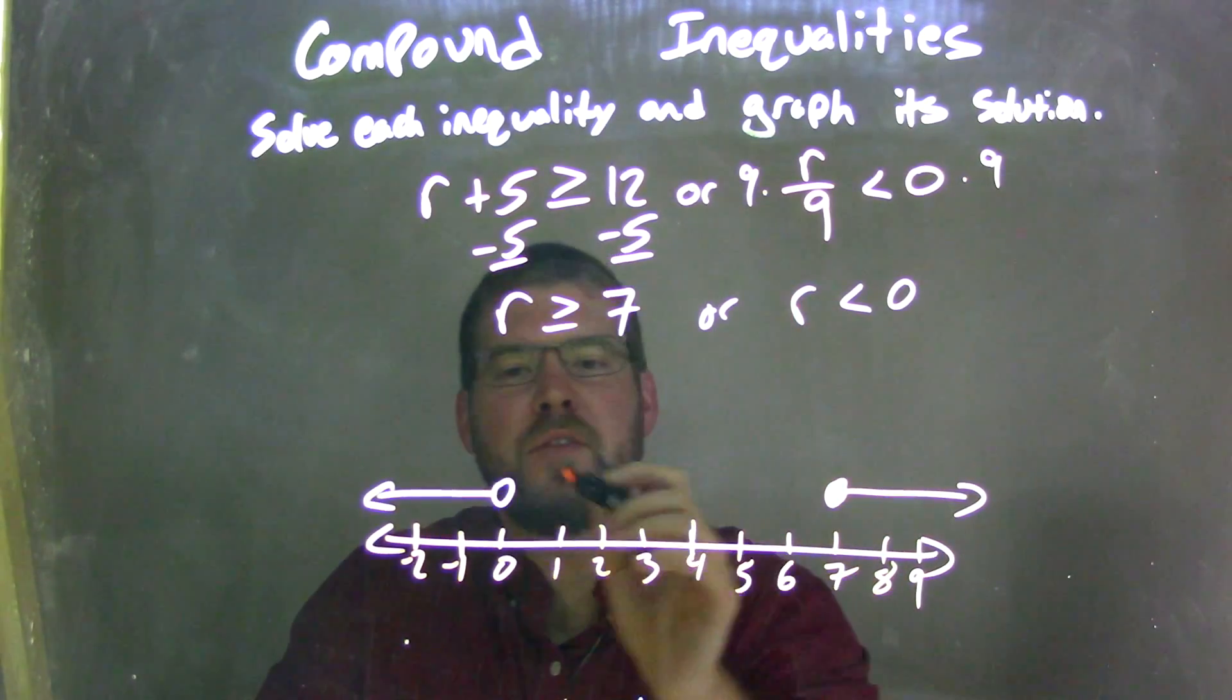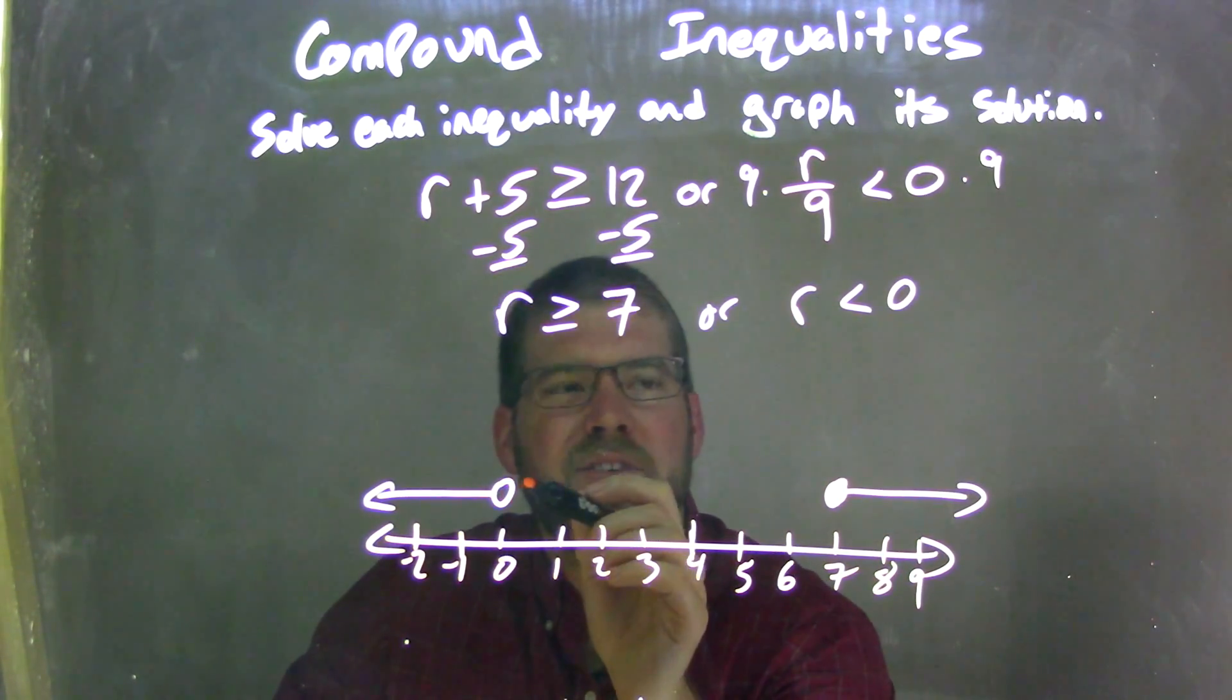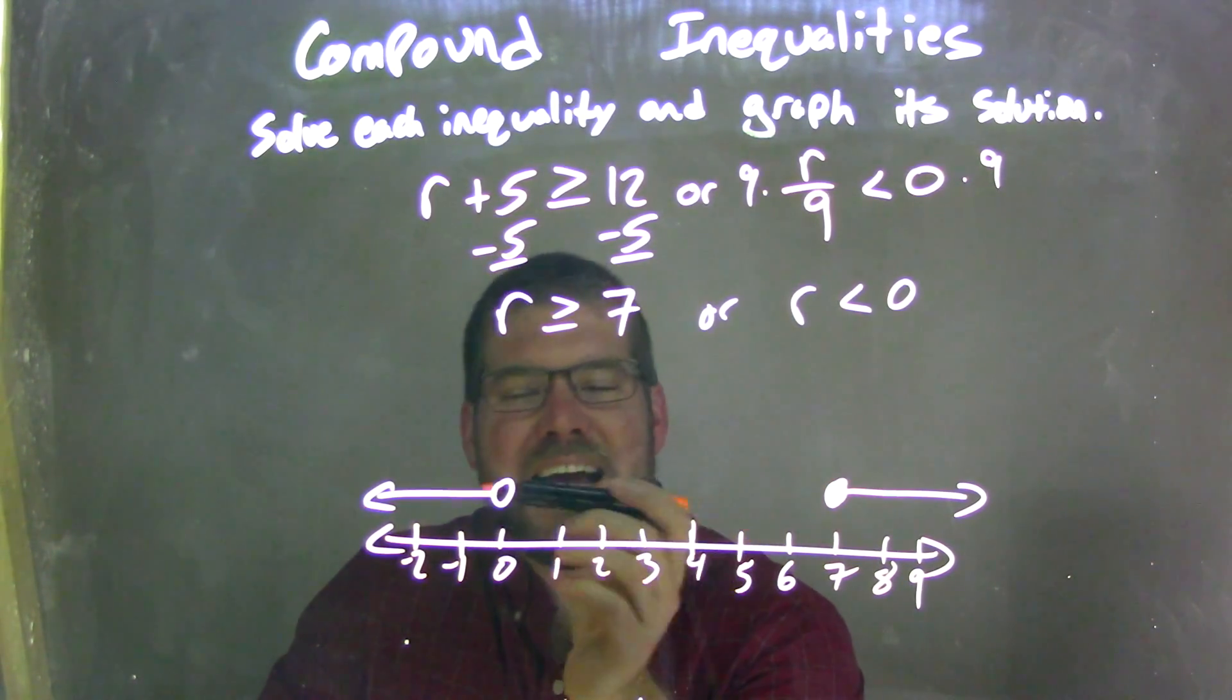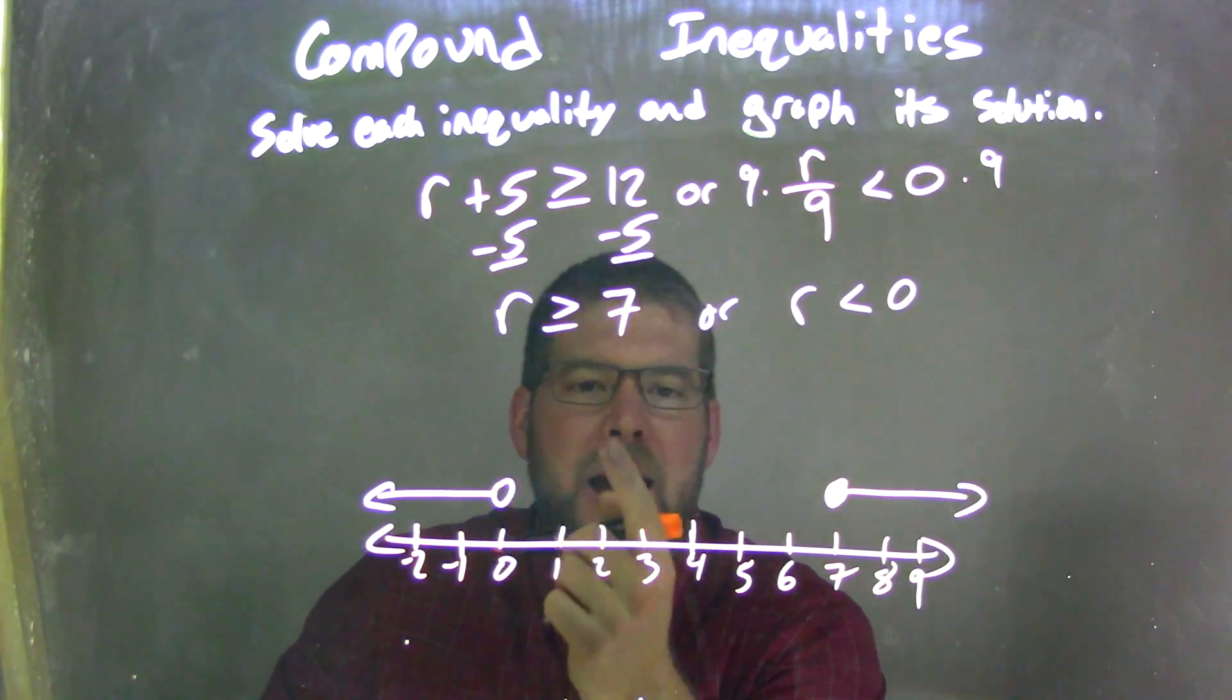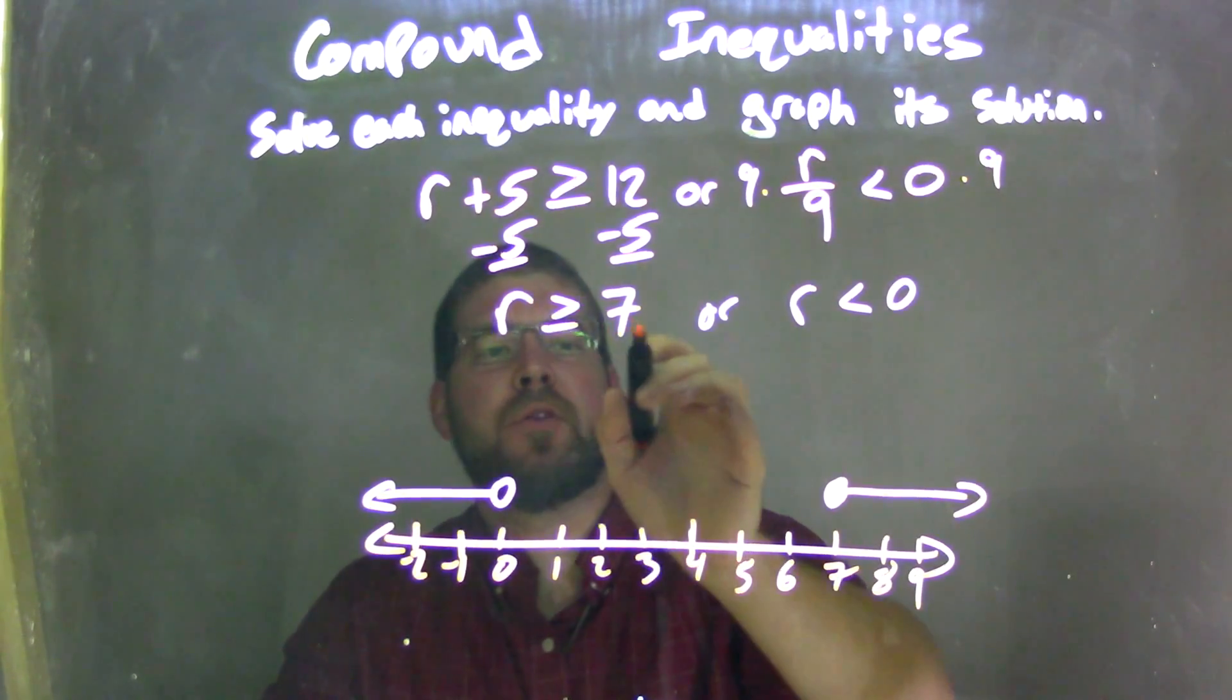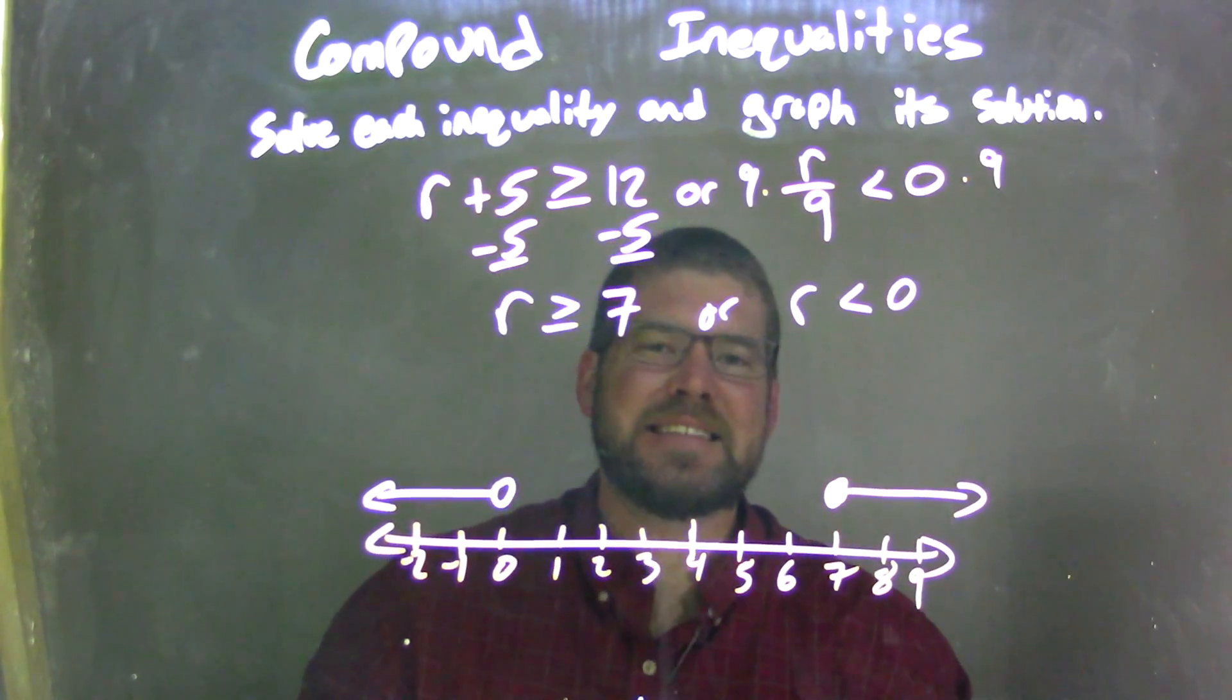Then r is less than 0, so I have an open circle at 0 because r is not equal to 0, and I put my arrow to the left because r is less than that 0. So now we have our graph that represents our final compound inequality, which is r is greater than or equal to 7, or r is less than 0.